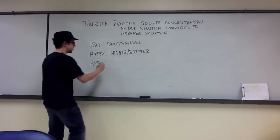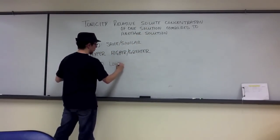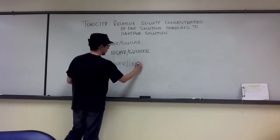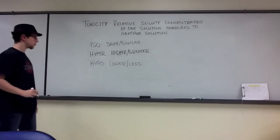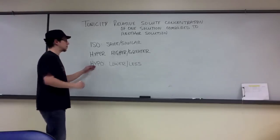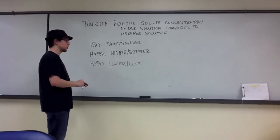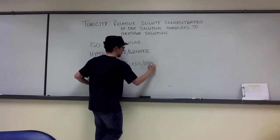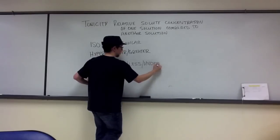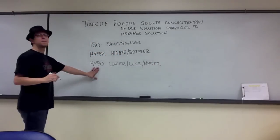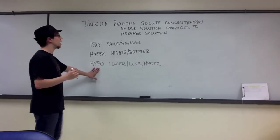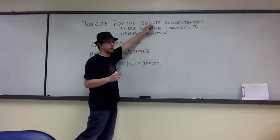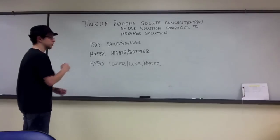So a hypertonic solution has a greater solute concentration than another solution. And hypo — we're going to have lower, less, or under. So a hypotonic solution will have a lower solute concentration than the other solution.